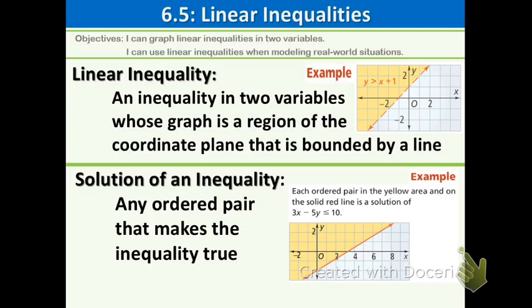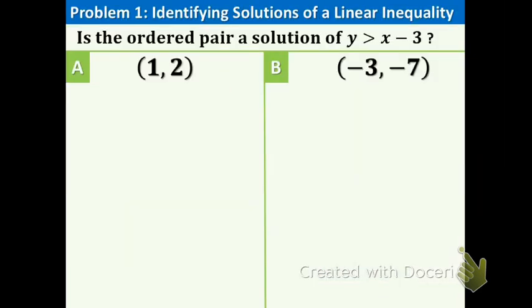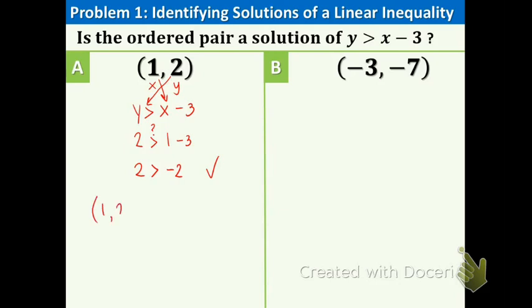Now let's take a look at example one: is the ordered pair a solution of y > x − 3? First, we label our points x and y and rewrite the inequality. A solution makes the inequality true, so we plug in 1 for x and 2 for y. We get: 2 > 1 − 3, which is 2 > −2. Is two greater than negative two? Yes, it is. Therefore (1, 2) is a solution, and if we graph that line, this point would be in the shaded area.